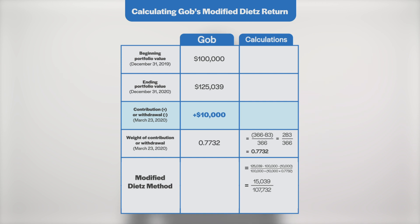If there was more than one cash flow during the measurement period, you would instead subtract the net cash flow amount. For the denominator, we take each cash flow, multiply it by the percentage of the measurement period it was in or absent from the portfolio, add these results together, and then add the grand total to the beginning portfolio value. With only one cash flow in our illustration, we multiply Job's $10,000 contribution by its 0.7732 weight, and add it to the beginning portfolio value of $100,000 to arrive at a denominator of $107,732. Dividing the numerator by the denominator, we arrive at Job's modified Dietz return of 13.96% — nearly identical to Job's 13.97% money-weighted rate of return from our past video.